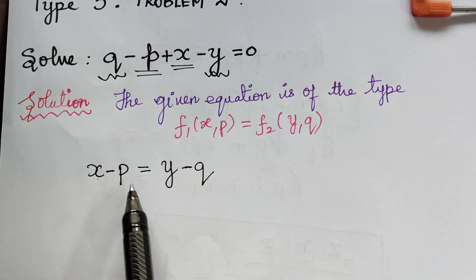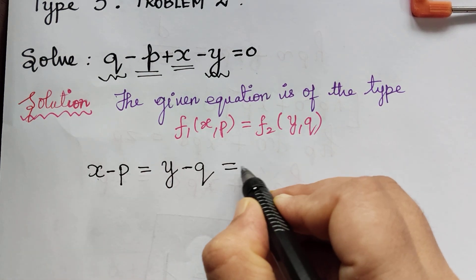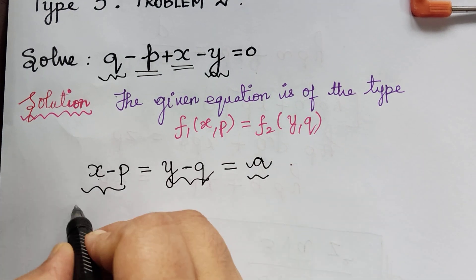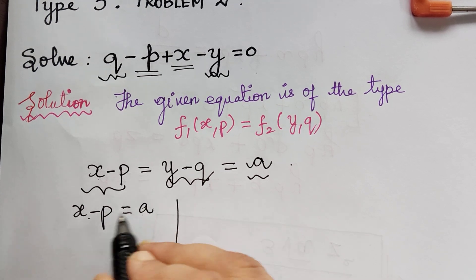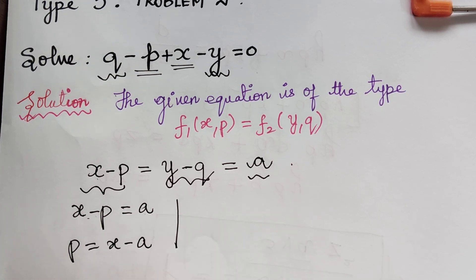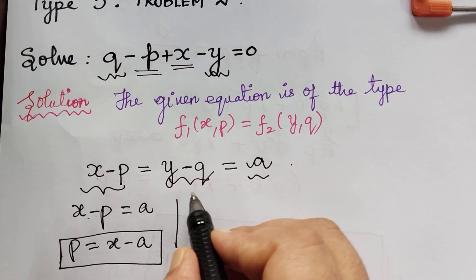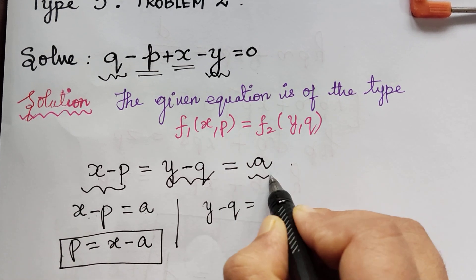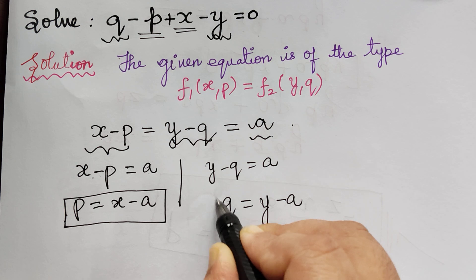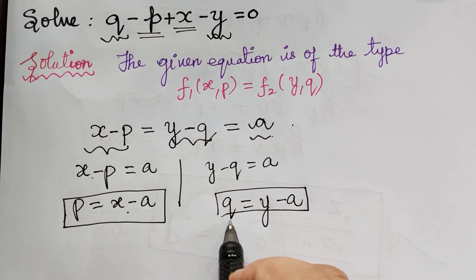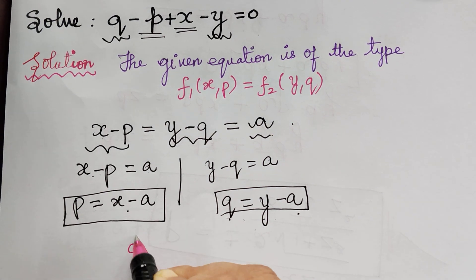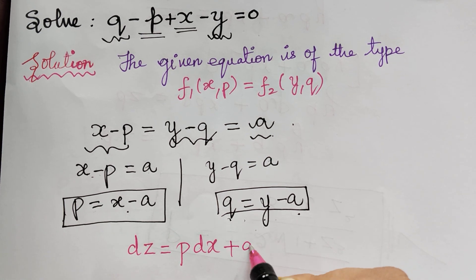We have rewritten the equation by separating the variables. This can be equated to a constant a, so each term equals a. From x minus p = a, we get p = x minus a. From y minus q = a, we get q = y minus a. So p = x minus a and q = y minus a. Now we substitute these into dz = p dx + q dy.